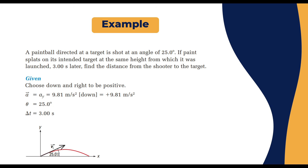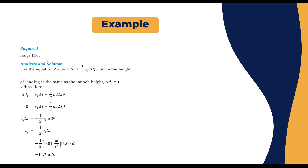Let's take another example. A paintball directed at a target is shot at an angle of 25 degrees. The paint splats on its intended target at the same height from which it was launched, so Δdy = 0, and Δt = 3 seconds. We need to find the distance from the shooter to the target. Convention: down and right are positive, so a_y = +9.81 m/s².